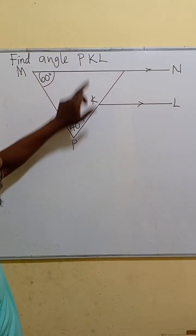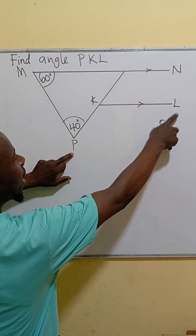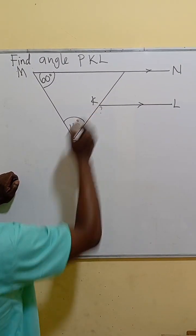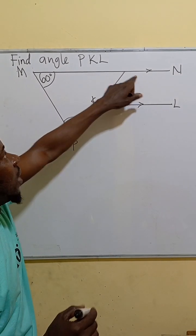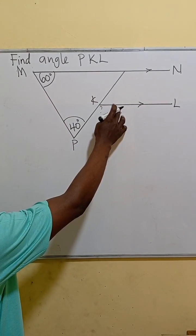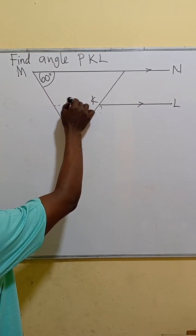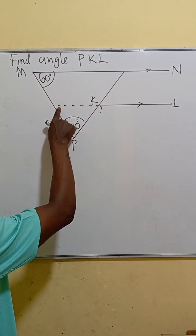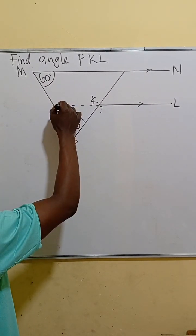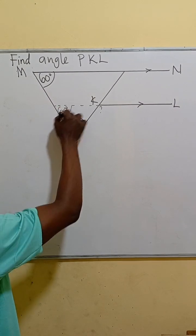Find angle PKL. We can see this line and this line are parallel. If we extend this line, since it is parallel to this, by the corresponding angles theorem, this will also be